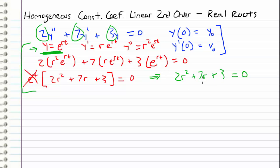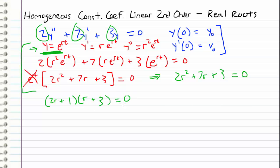Let's go ahead and solve for r. The first approach I'd try is factoring — it's much easier than the quadratic formula. We can factor 2r² + 7r + 3 into (2r + 1)(r + 3). Setting each factor equal to zero gives 2r + 1 = 0 or r + 3 = 0, yielding the two roots r₁ = −1/2 and r₂ = −3.